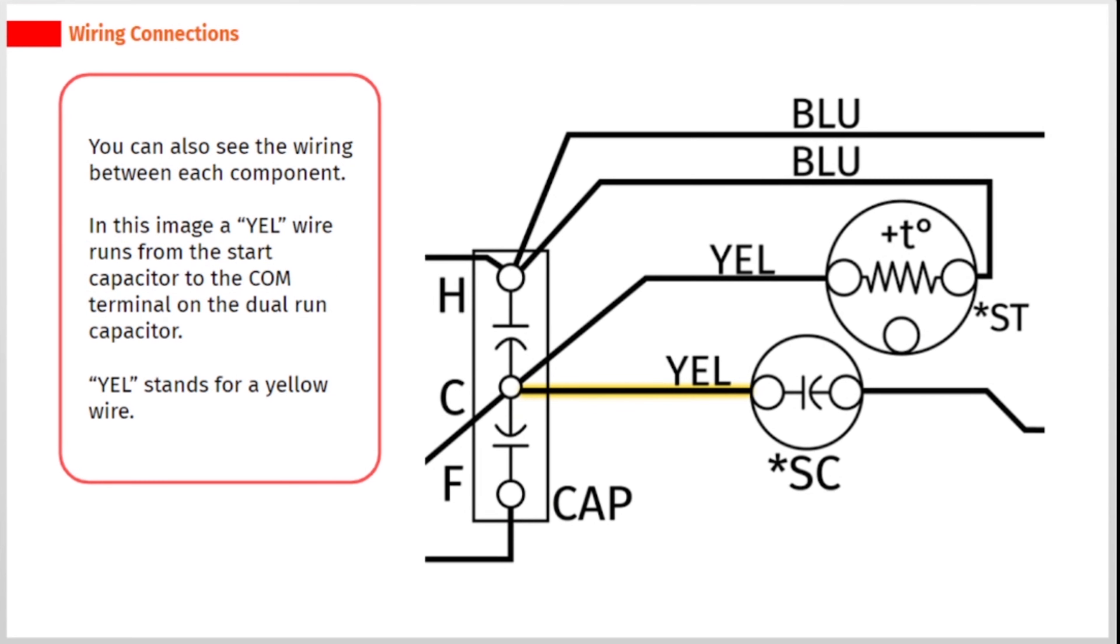You can also see the wiring between each component. In this image a YEL wire runs from the start capacitor to the COM terminal on the dual run capacitor. YEL stands for a yellow wire.